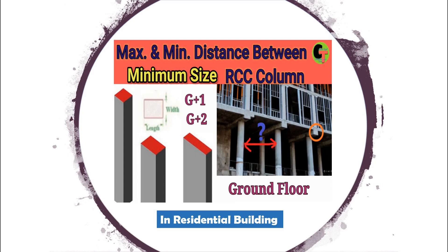Daily we will come across a house, complex, apartments etc. In that, different sizes of columns are used with different spacing between them. So today in this video we will see what should be the maximum and minimum distance between two RCC columns in a residential building, and what should be the minimum size used in residential building construction for ground floor, G plus 1, and G plus 2 storey house construction.